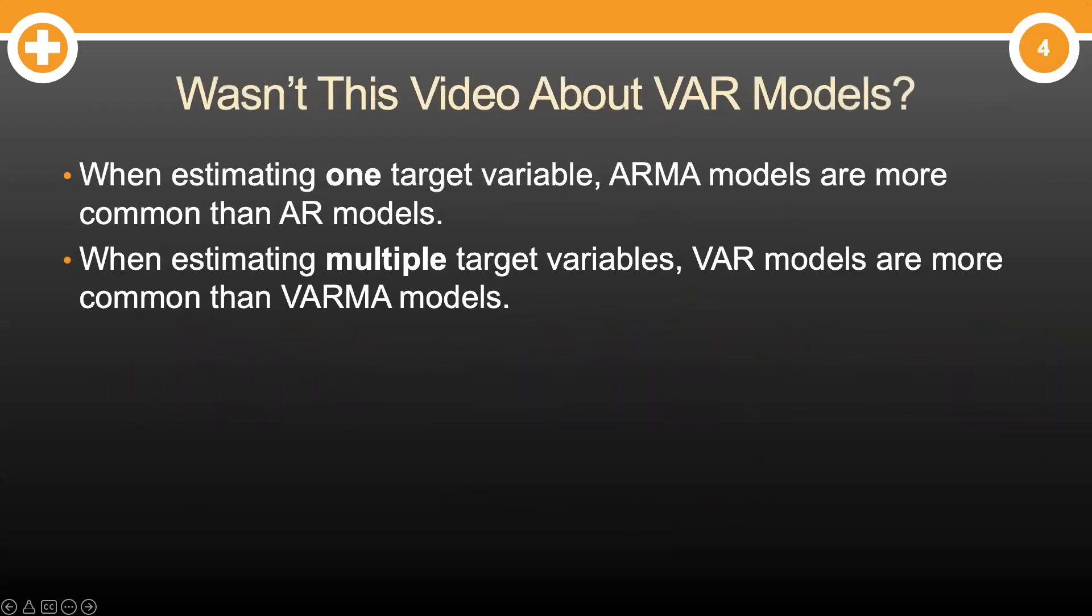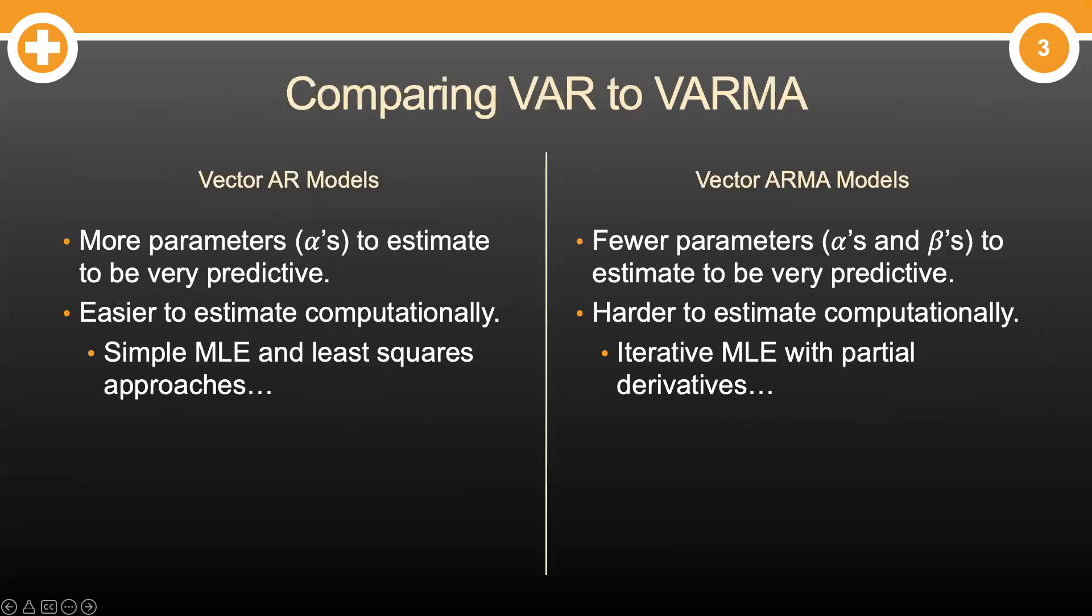Now, I know what you're thinking. Why did we say we were talking about the vector AR model and not the vector ARMA model? Well, actually, even though when we typically model one target variable, ARMA models are more common than AR models. In practice, vector AR models are more common than vector ARMA models. But why? VAR models have more parameters that typically need to be estimated to be as predictive as their corresponding smaller VARMA models.